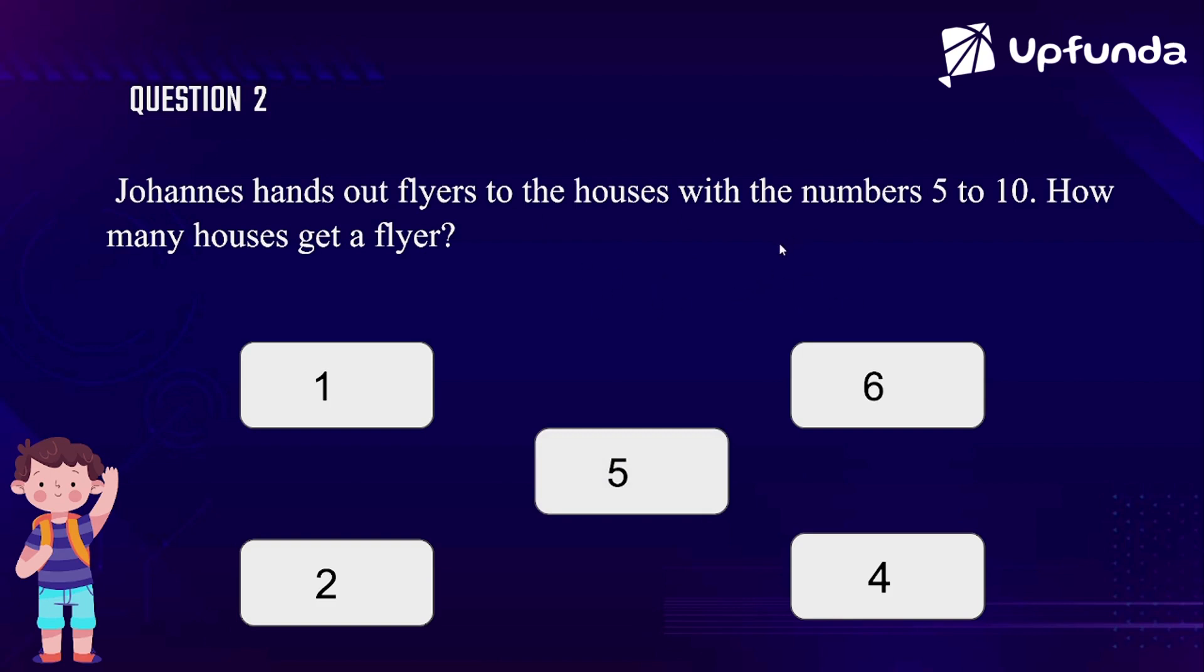Flyers to the houses with the numbers 5 to 10. For example, here it starts from 5 till 10, right? 5, 6, 7. So you cannot do 10 minus 5. I'll tell you why.